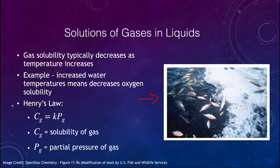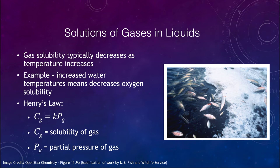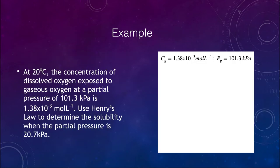Now let's talk about Henry's Law, which relates the solubility of a gas to the pressure of the gas by a constant. The equation is: C_g = k × P_g, where C_g is the solubility and P_g is the partial pressure of that gas. Let's look at a couple of examples of how to use this.